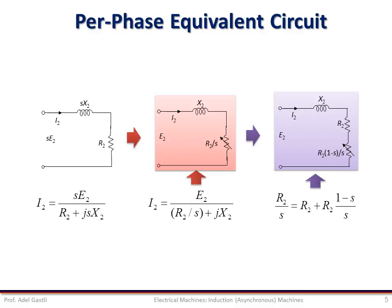This leads to the equivalent circuit where the constant rotor resistance R2 represents the ohmic losses in the rotor windings, while the second resistance, which is a function of the slip, represents the mechanical power developed by the rotor. So we have built an equivalent circuit for the rotor circuit having the same frequency as the stator supply frequency.